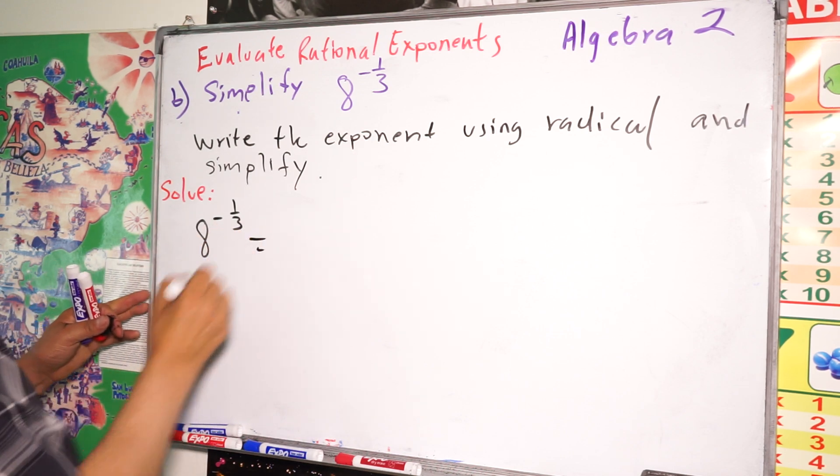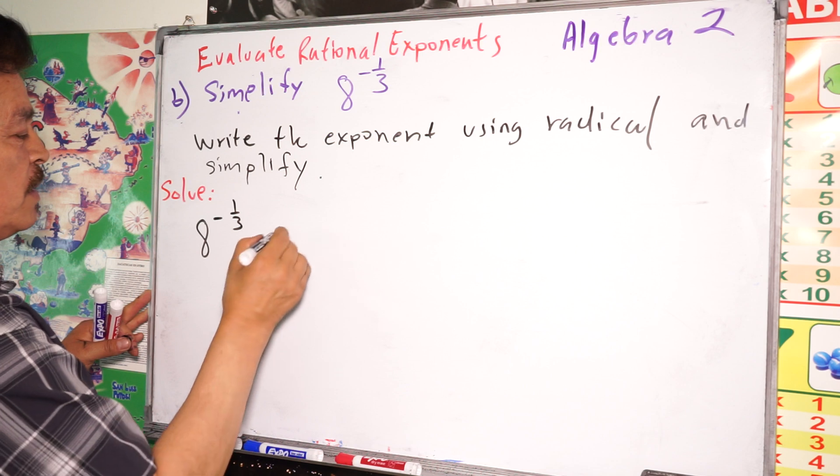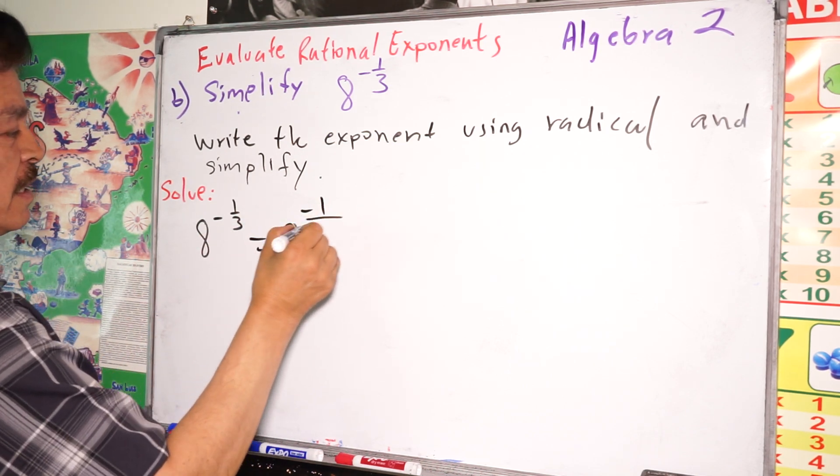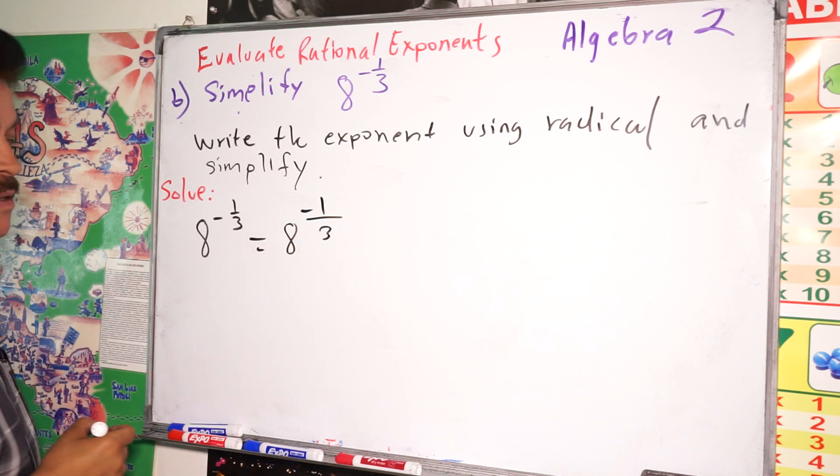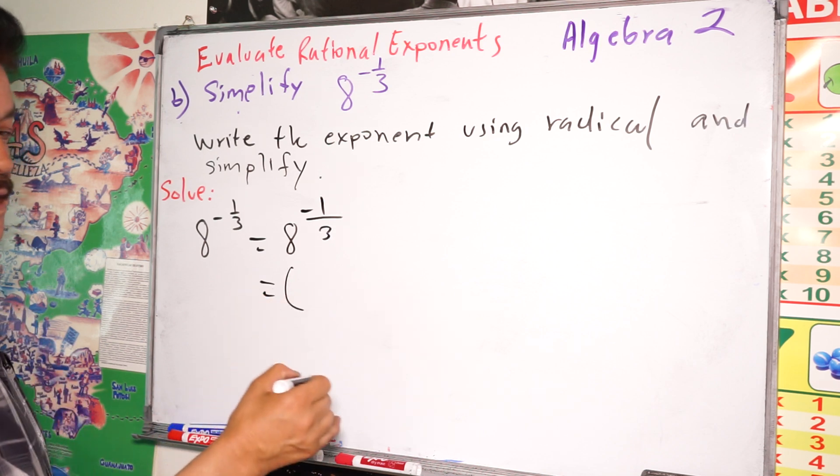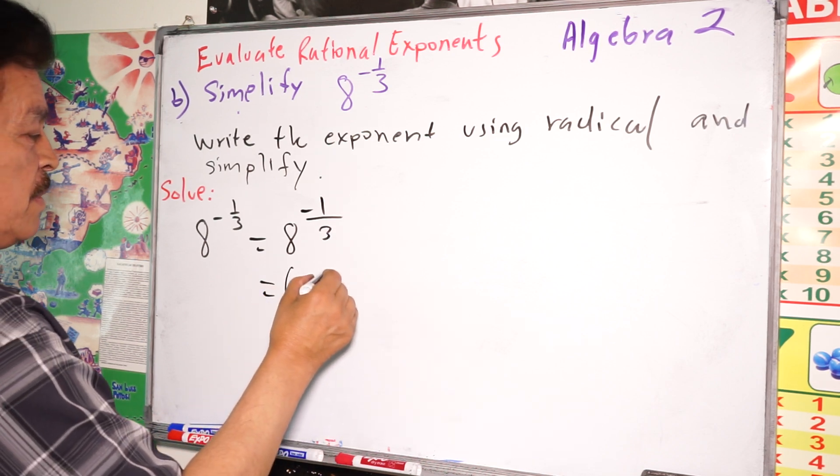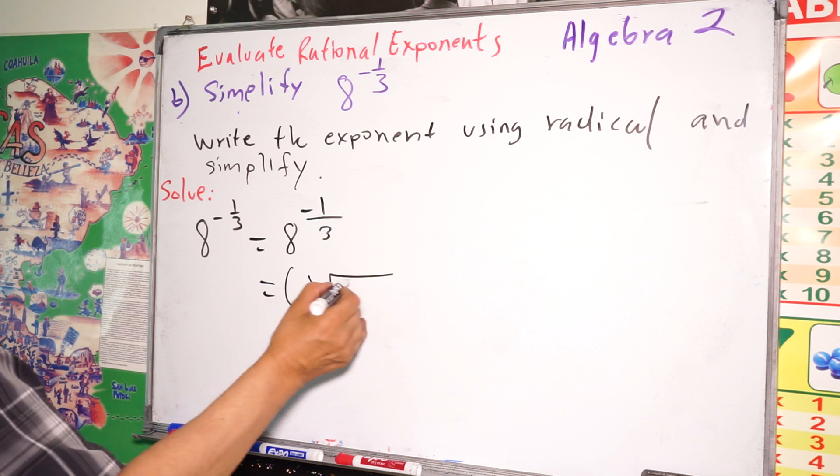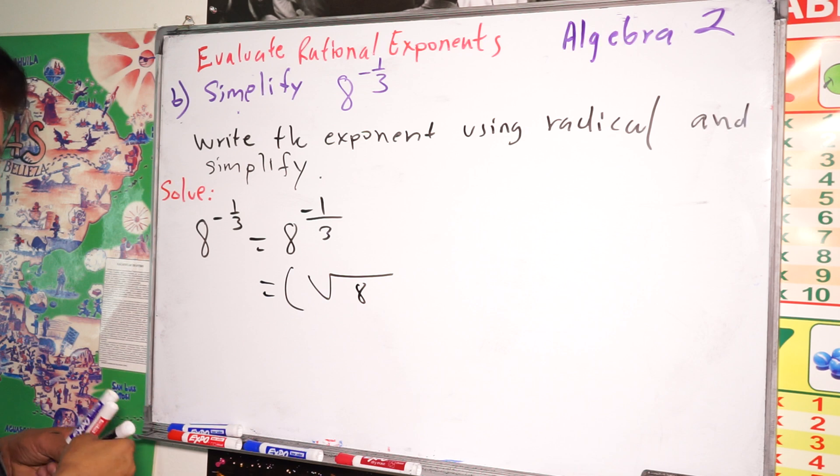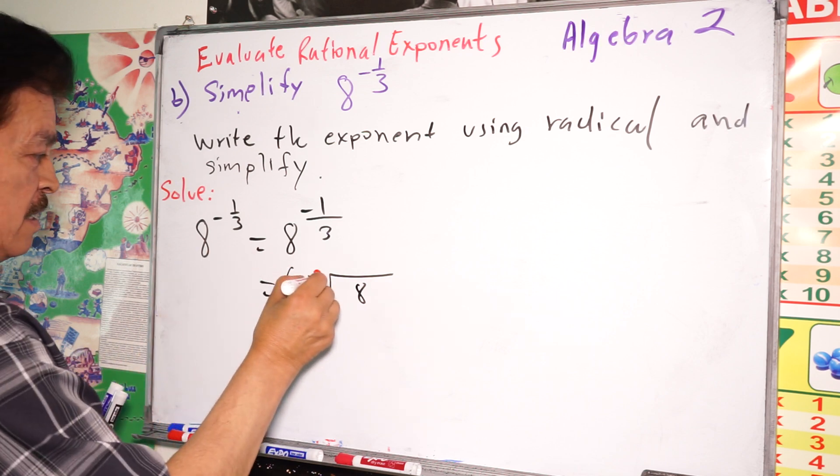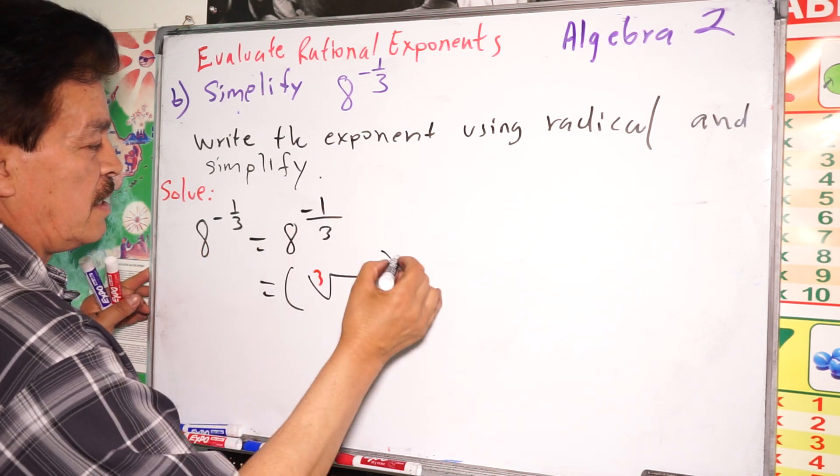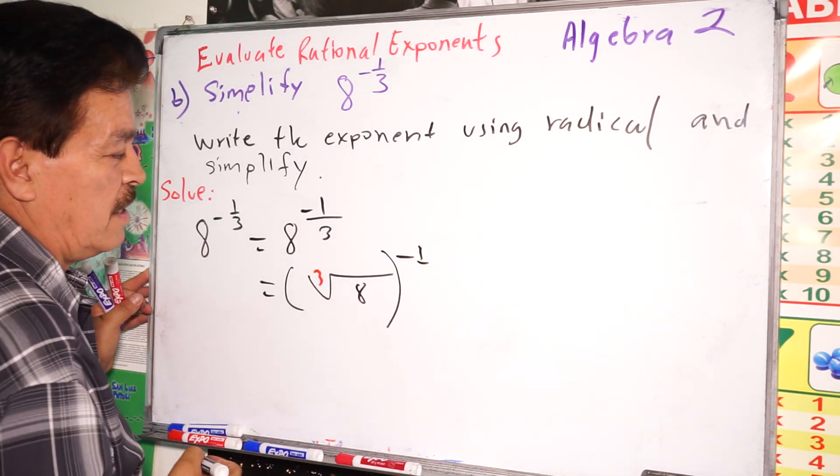So 8^(-1/3), let me write solve here, should equal 8^(-1/3), just write negative 1 on top and then in the denominator 3. So next step, here, make the radical, this is the number right here and then here, what is the number? 3. This is 3.